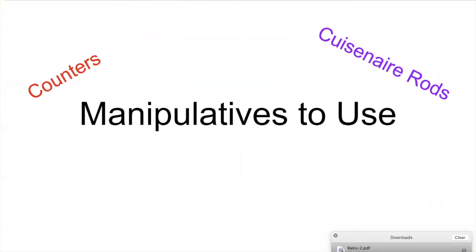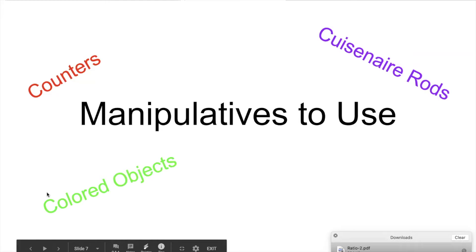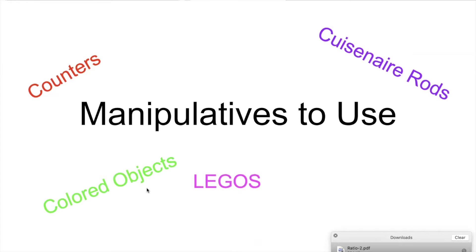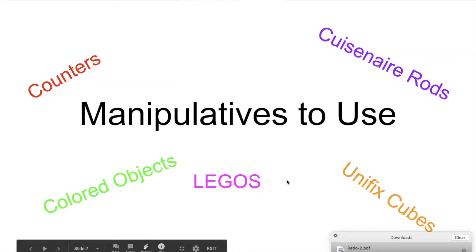Manipulatives you can use include counters, Cuisenaire rods — which most people only think about for multiplication or fractions, but they're used for ratios too — any kind of colored objects for comparisons, Legos which can be used as numbers and as colors, Unifix cubes, and beads. I want to use manipulatives you have in the classroom but also ones kids can use at home, because many need multiple exposures.